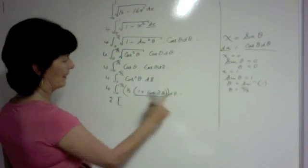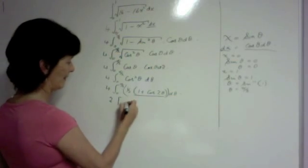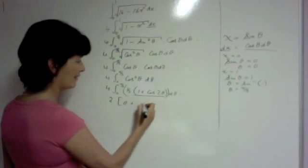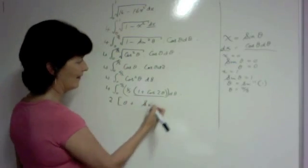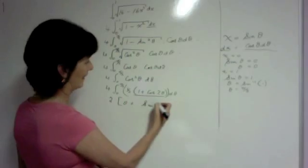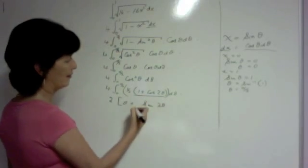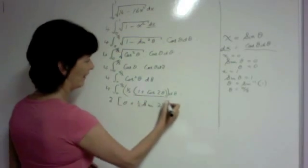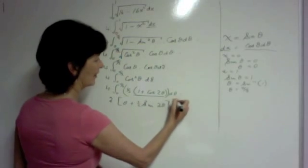And integrating that with respect to theta, 1 becomes theta. Cos goes to sine. And differentiation and integration, your angle never changes. And in integration, you divide by the differential of the angle. That gives you a half. And our limits are 0 to pi over 2.